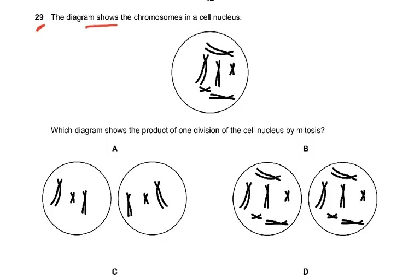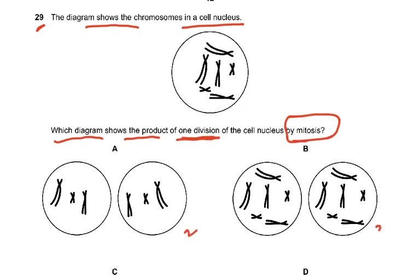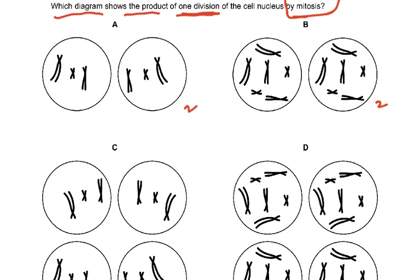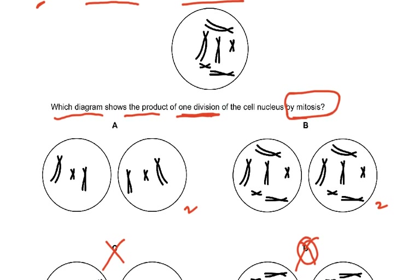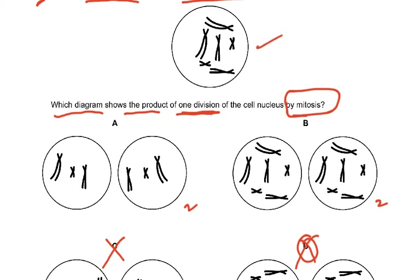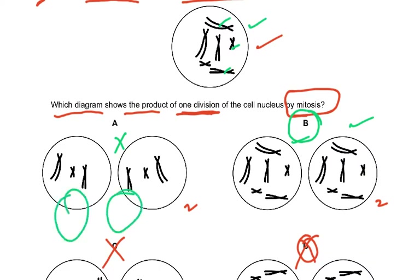Question 29: the diagram shows chromosomes in a cell nucleus — which diagram shows the products of one division by mitosis? Options C and D show four cells, which is wrong because mitosis does not produce four cells; only meiosis produces four cells. Looking at A and B: in mitosis, daughter cells are genetically identical. The cells in B are genetically identical, so the answer is B. Option A shows half the number of chromosomes — one of each pair — which is characteristic of meiosis, but even then it's wrong because meiosis produces four cells.